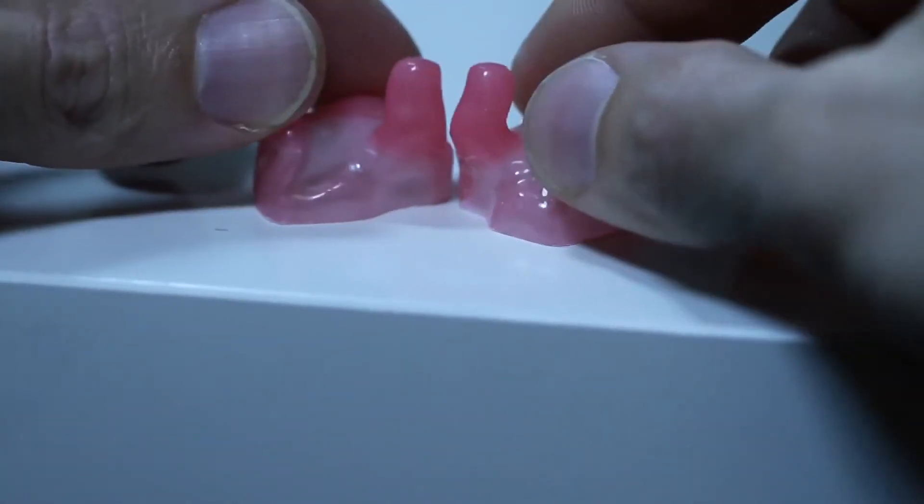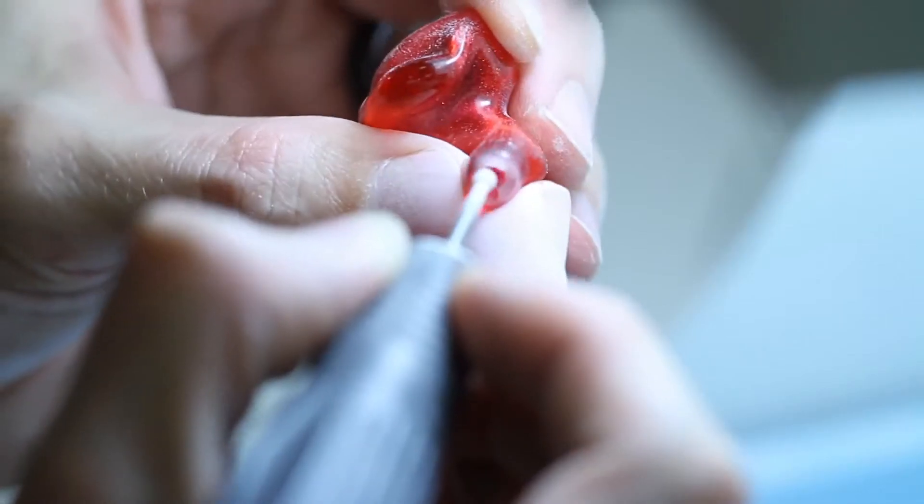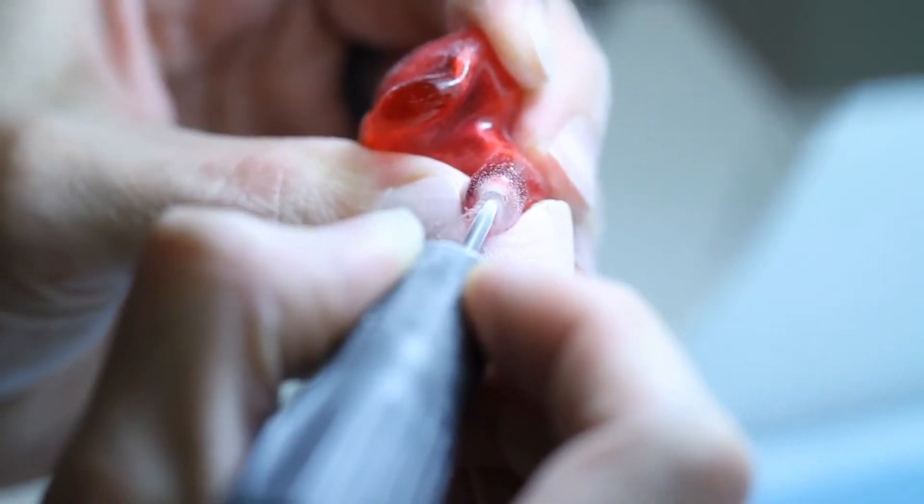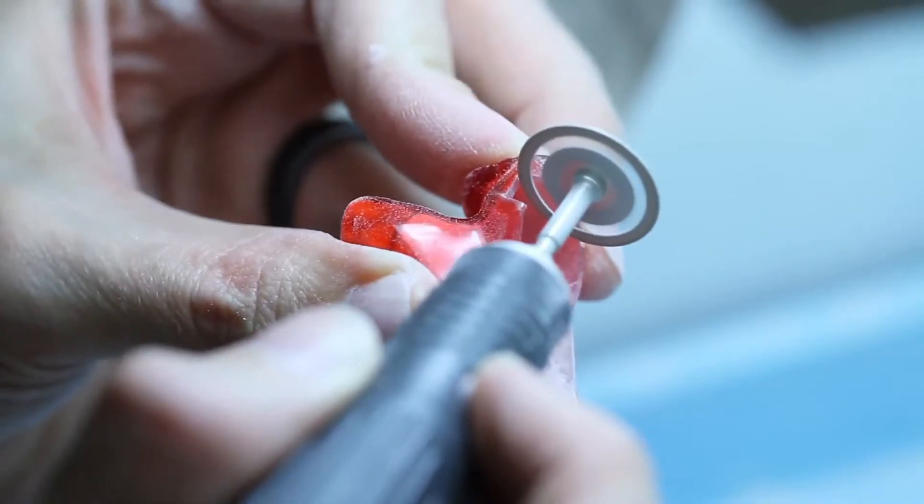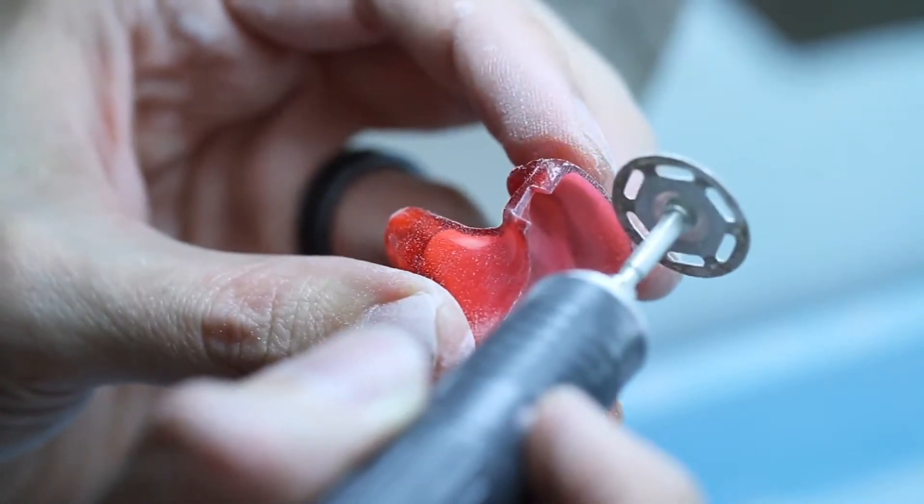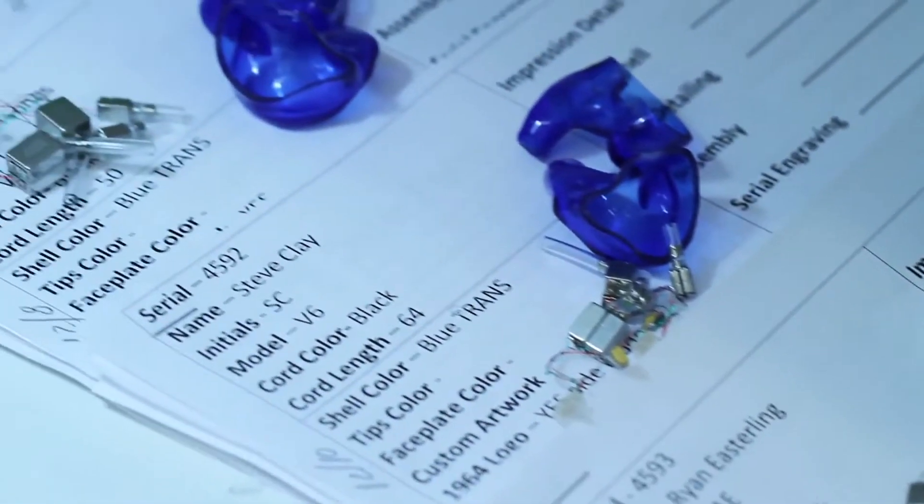After the shell is made, it also must undergo some trimming and detailing before it's ready for assembly of the components. We drill the appropriate notches and channels for the sound tubes and cable sockets. When the shells are ready, they go into the assembly area.